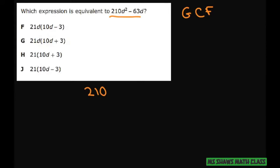So I'm going to write 210d squared minus 63d. Now when you factor, it's like dividing, but you don't lose your divisor.